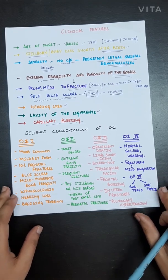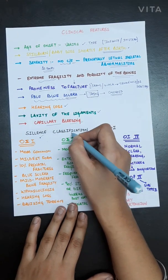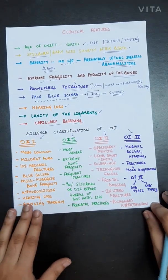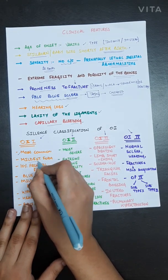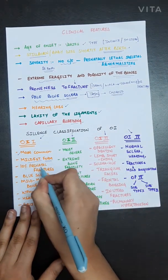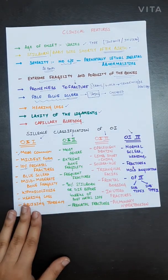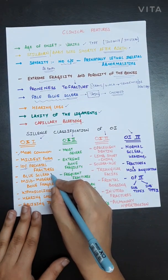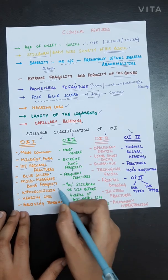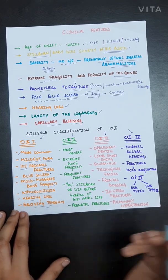According to the Sillence classification, there are four types of osteogenesis imperfecta. Type 1 is the most common and mildest form. In this type, there is a 10% chance of prenatal fractures, pale blue sclera is present, and there is mild to moderate bone fragility, spinal defects such as kyphoscoliosis, hearing loss, and bruising tendencies.